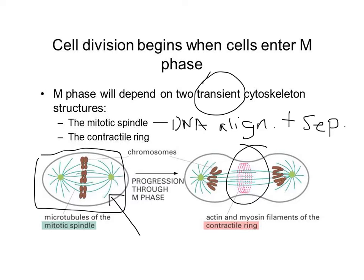Another temporary cytoskeletal structure important in animal cells is the contractile ring. The contractile ring consists mostly of actin and myosin motors. Ultimately, the contractile ring will decrease in diameter — due to walking of myosin motors — and this will help pinch in the membrane of the cell and lead to cytoplasmic cleavage. This is a transient structure we see in animal cells but not in plant cells, and it's important for cytokinesis.